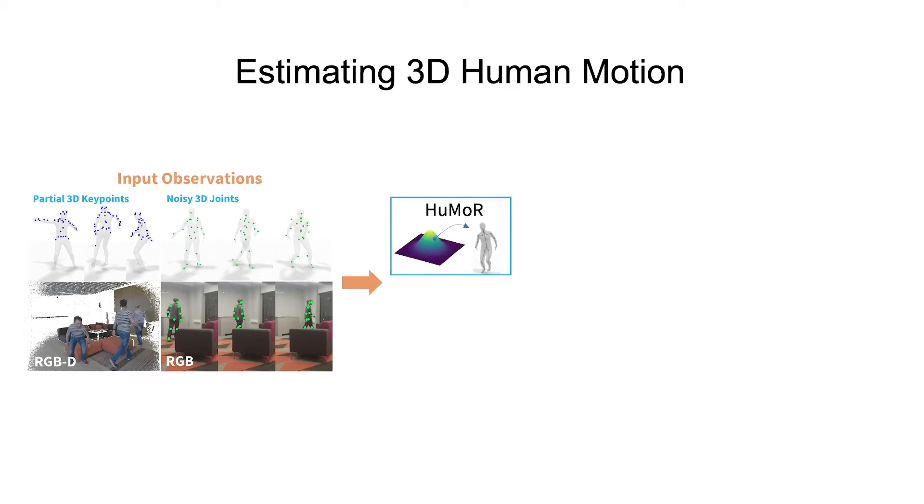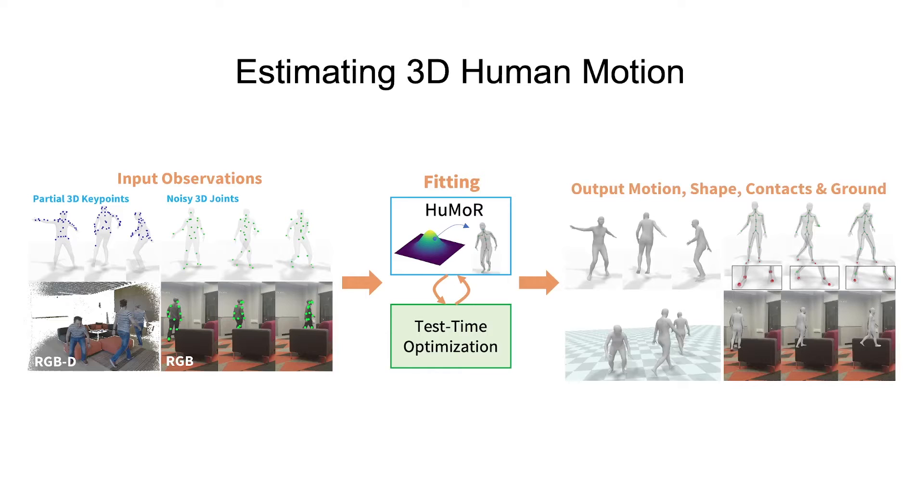We propose an expressive generative model called HUMOR, which learns a distribution of plausible human motion. This model is leveraged as a prior in a flexible optimization-based approach to robustly estimate pose, shape, and ground contacts from ambiguous observations.